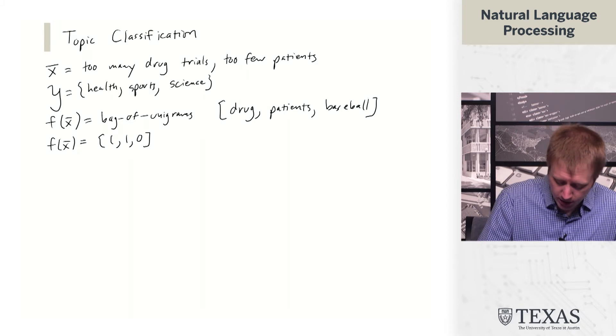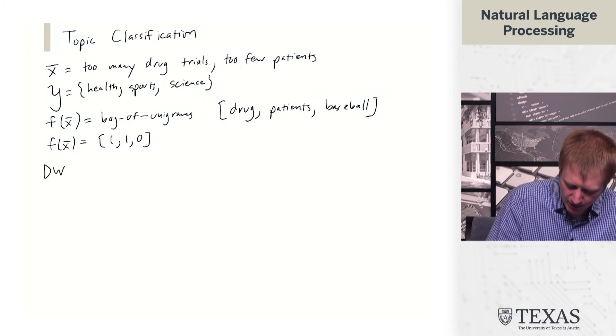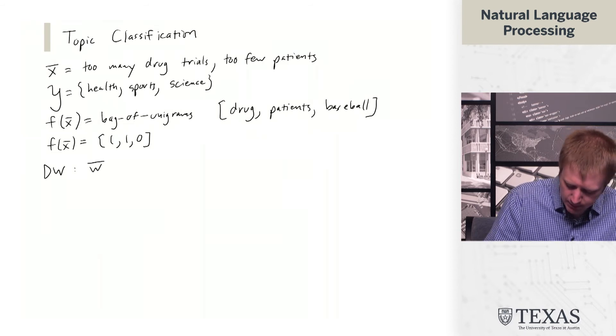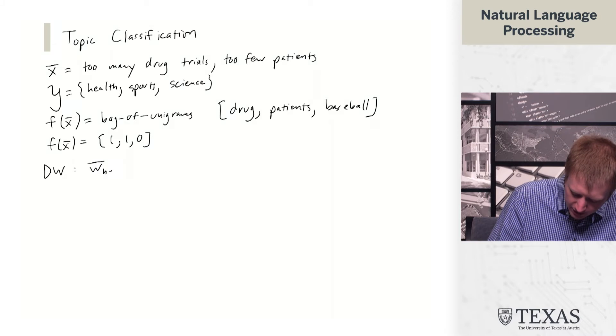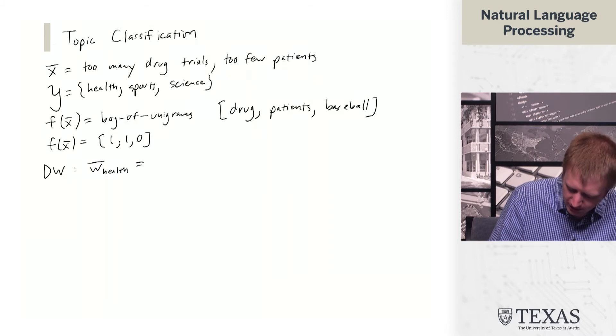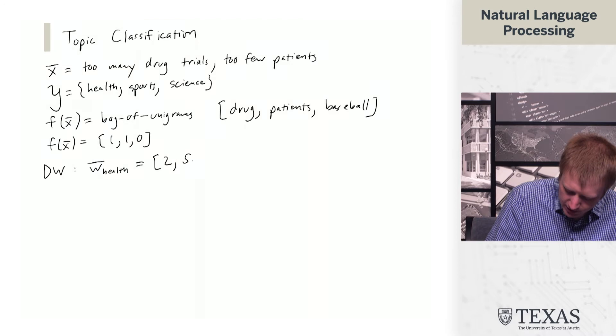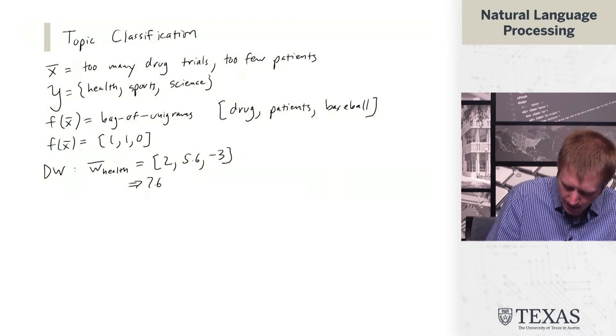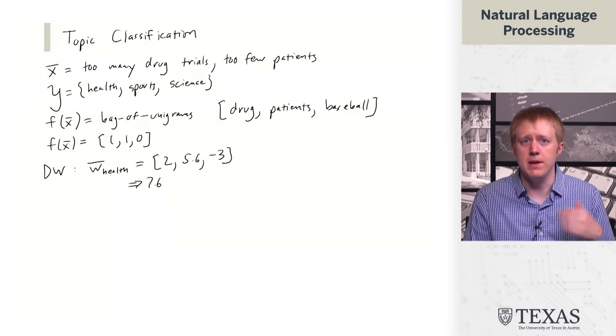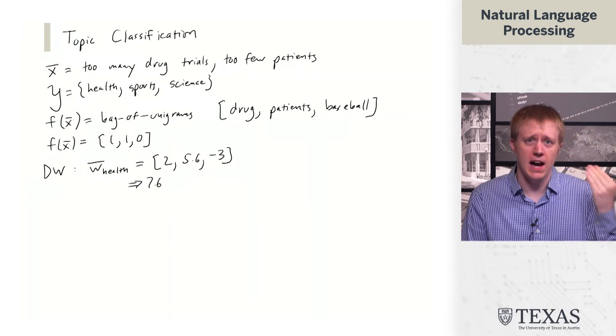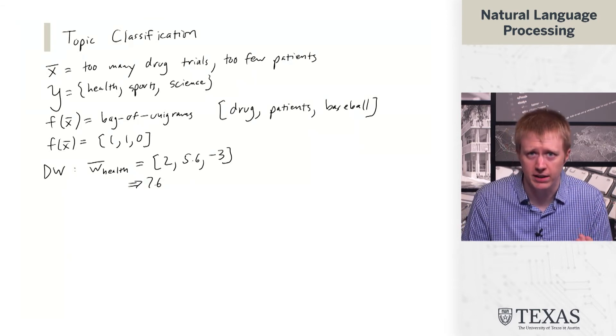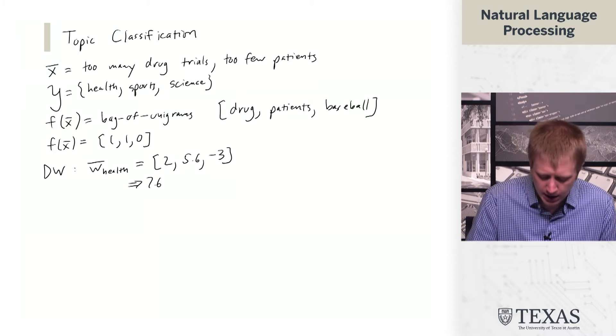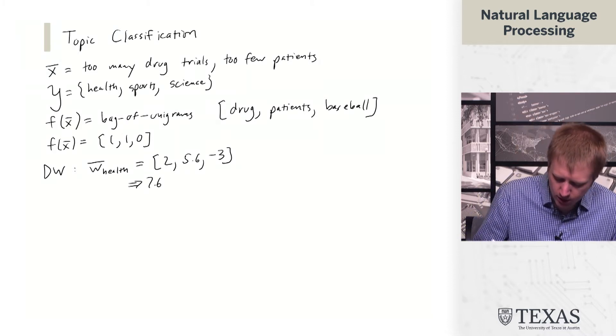That's sufficient to think about the different weights version of this. In the different weights version we think about, for example, the weight vector. We have a w_health weight vector. Maybe drug and patients both have high weights under this weight vector, but baseball has a low weight because typically health articles won't talk about baseball. This gives us a score of 7.6.